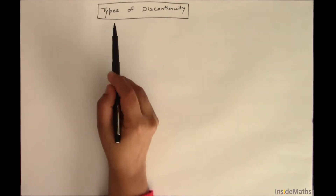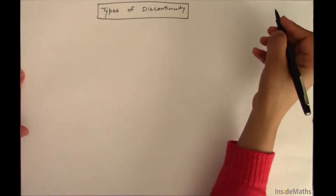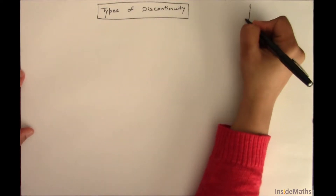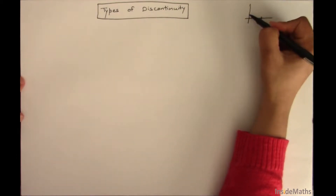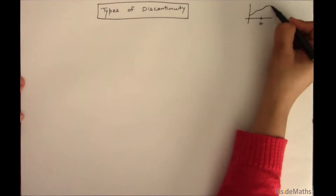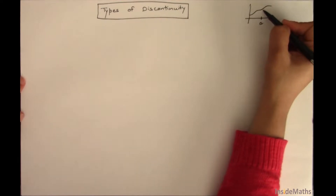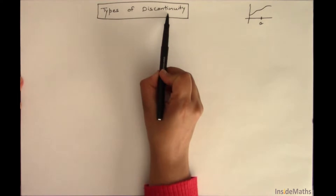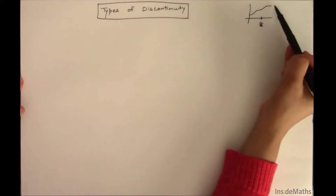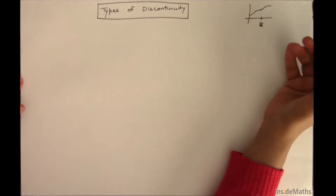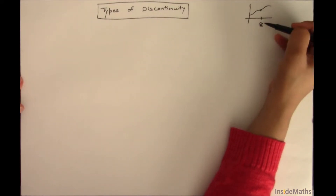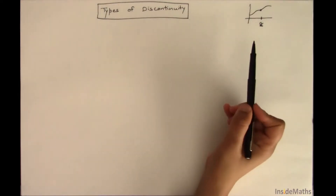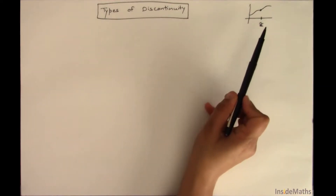In this video you will see different types of discontinuity. A function is continuous at some point A if the curve of the function passes through that point. If the curve is not passing through that point, that means the function is discontinuous at point A. If there is a little hole, a jump, or the function does not exist at that point, then the function will be discontinuous at that point.